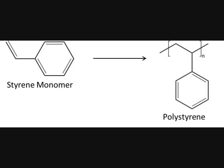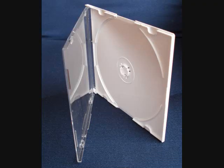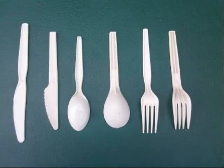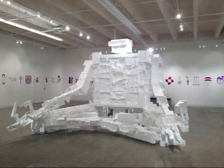Polystyrene, or PS, is made of the styrene monomer. It is used in CD cases and disposable utensils, but can also be melted and filled with air, making the lovely environmental contaminant known as styrofoam.